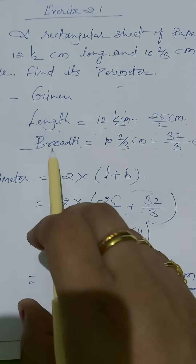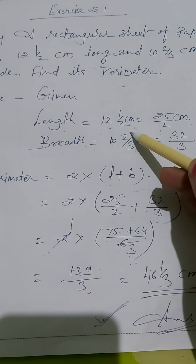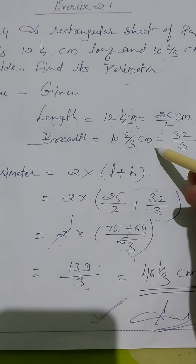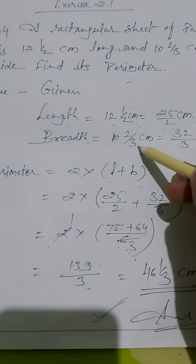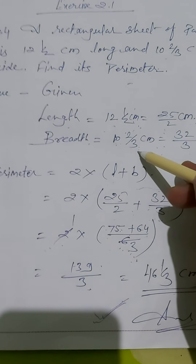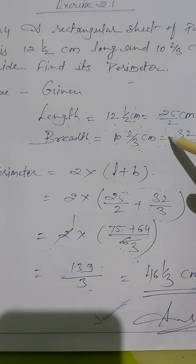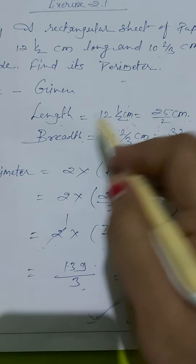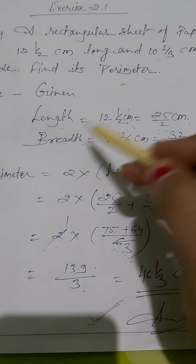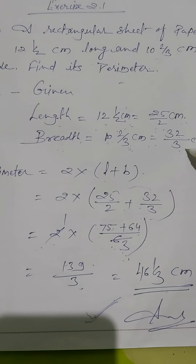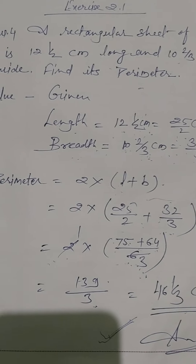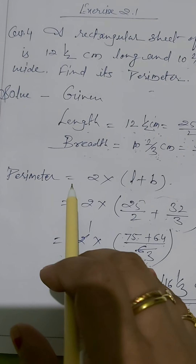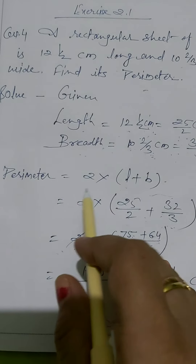The breadth is also given as a mixed fraction: 10 and 2/3 centimeters. Converting it: 10×3 = 30, plus 2 = 32, so breadth = 32/3 centimeters. Now we have length = 25/2 cm and breadth = 32/3 cm.